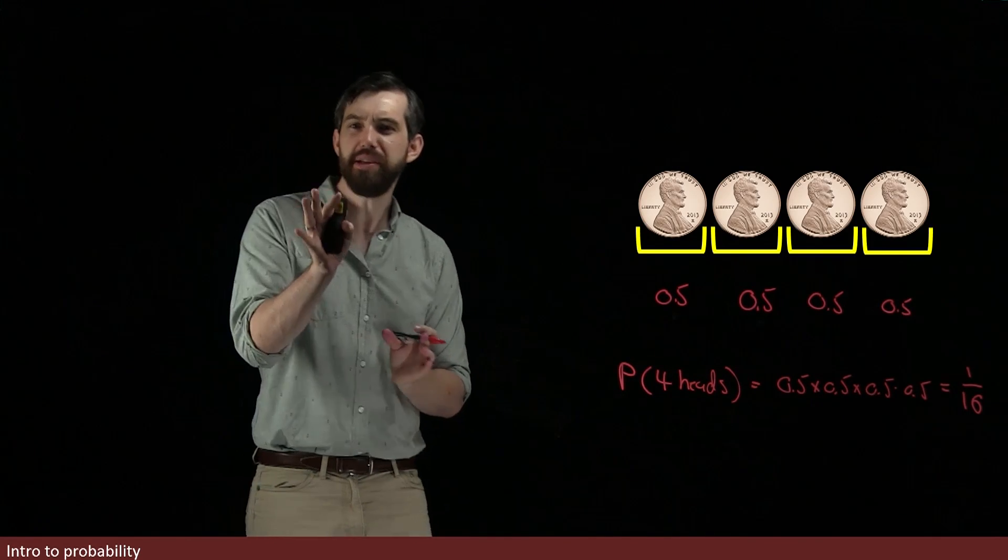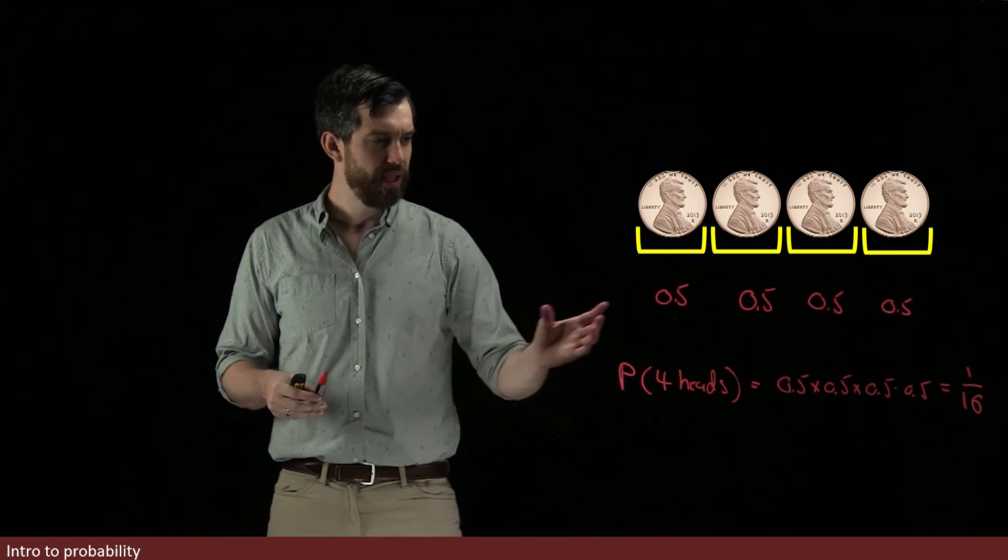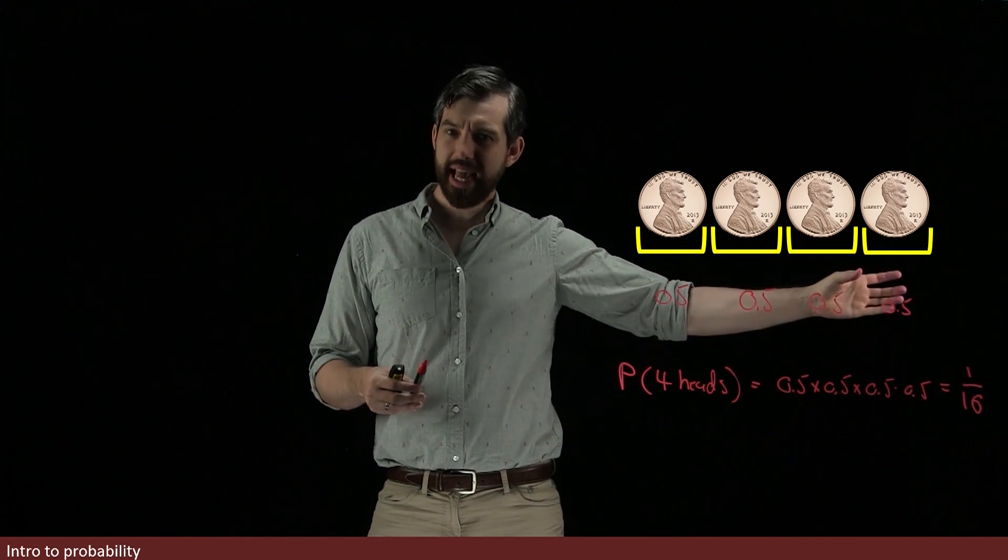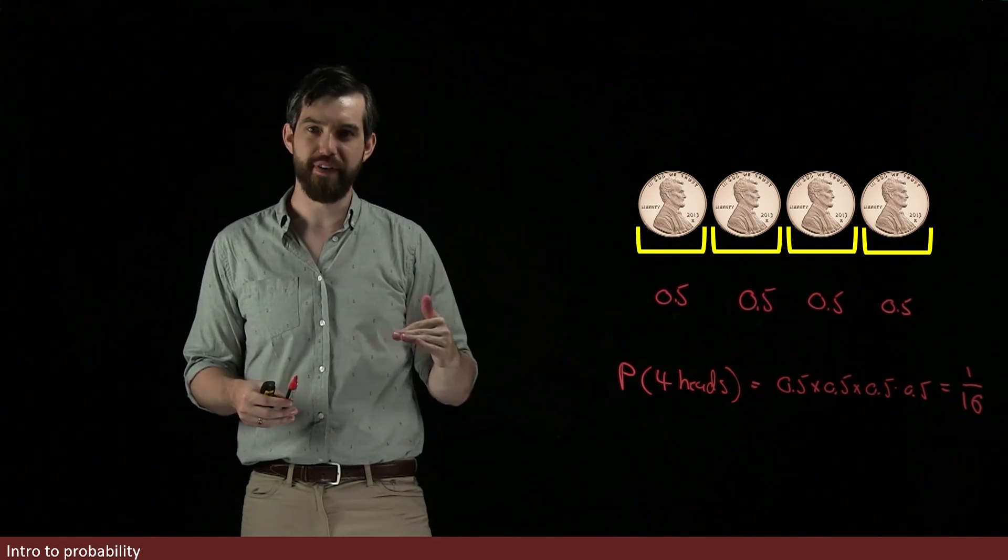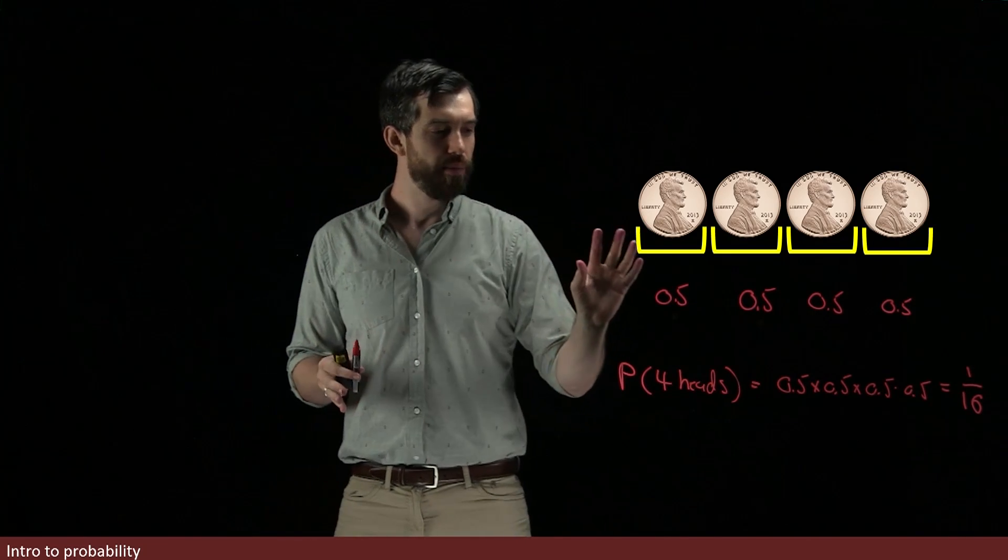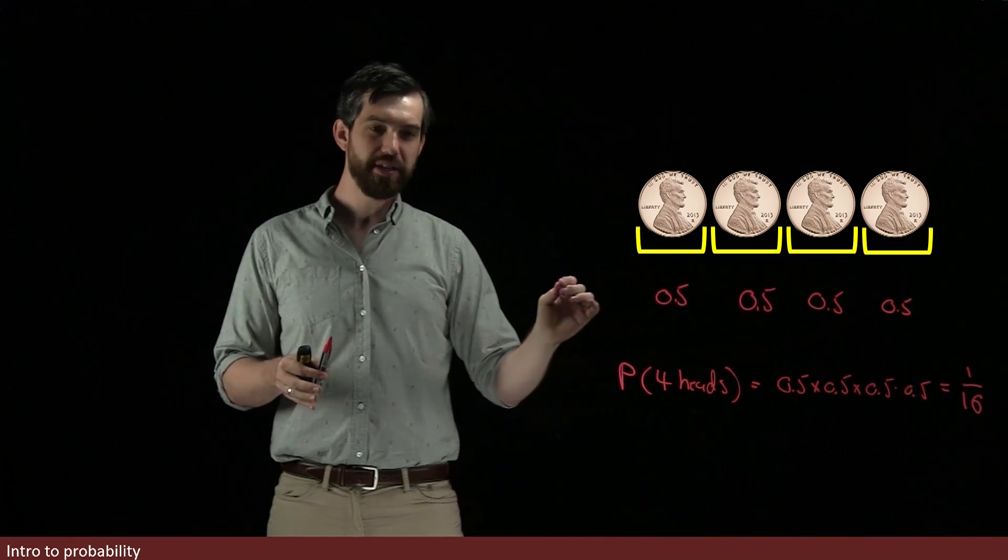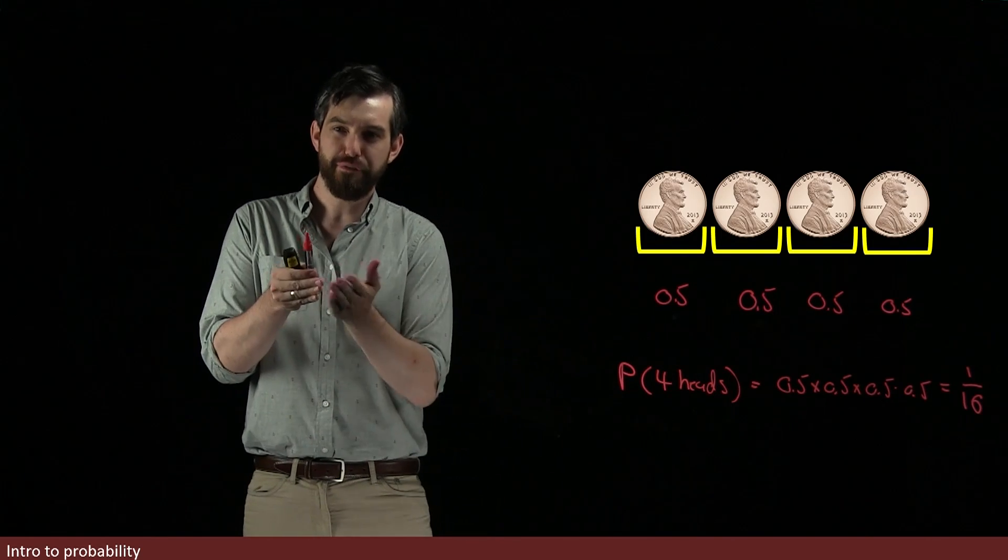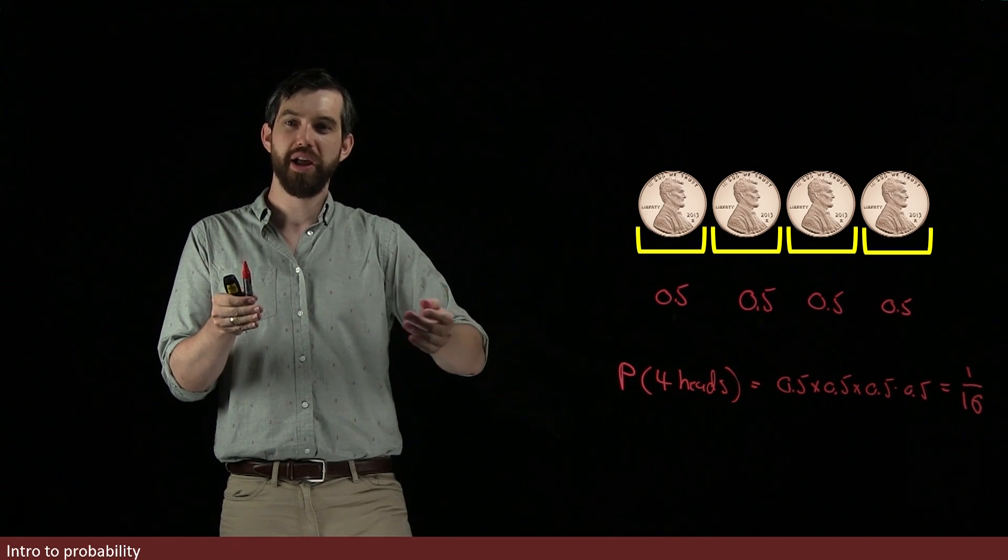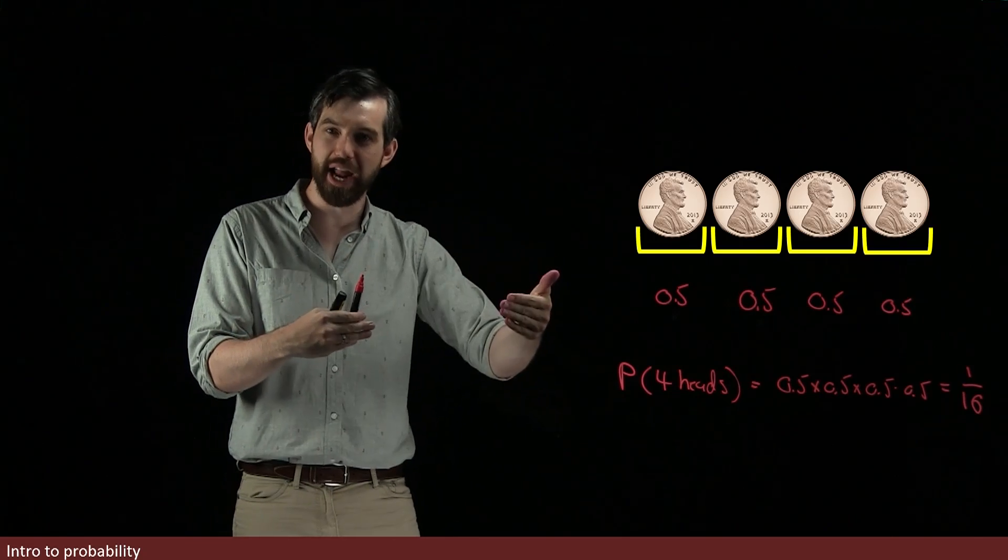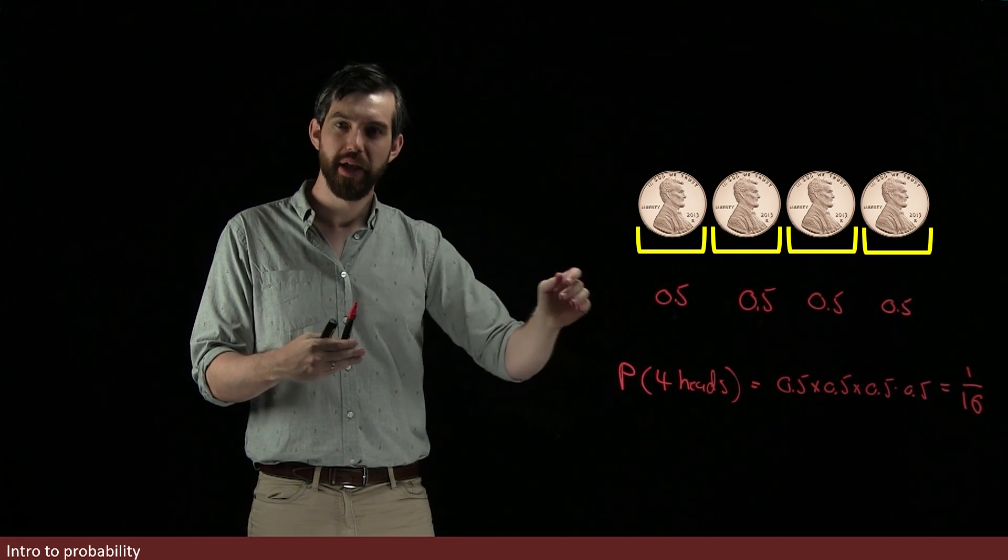So there seems to be some sort of rule here, which is that when I have multiple stages in some system of events, what I do is I multiply the probabilities. And the probability of having four heads in a row is, therefore, the probability of an individual head multiplied four times.